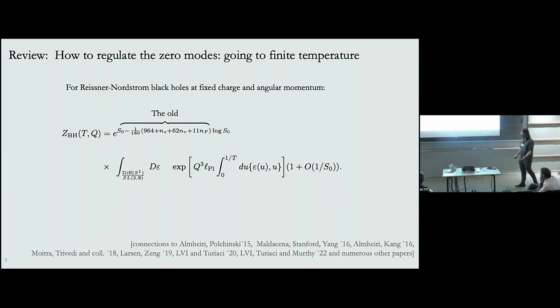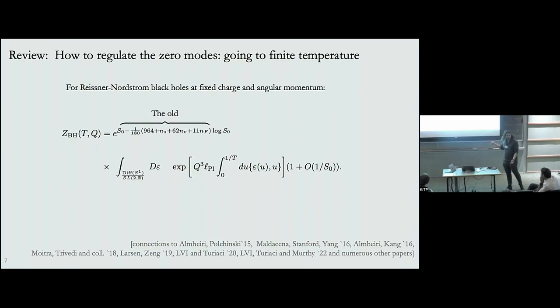At small temperatures this theory is strongly coupled. It appears with coupling Q³ times l_Planck, where Q is the charge of the black hole. One can redefine time such that the effective coupling is Q³ l_Planck times T. When that number is small, you cannot do a trustworthy evaluation of this path integral using a saddle-point approximation.